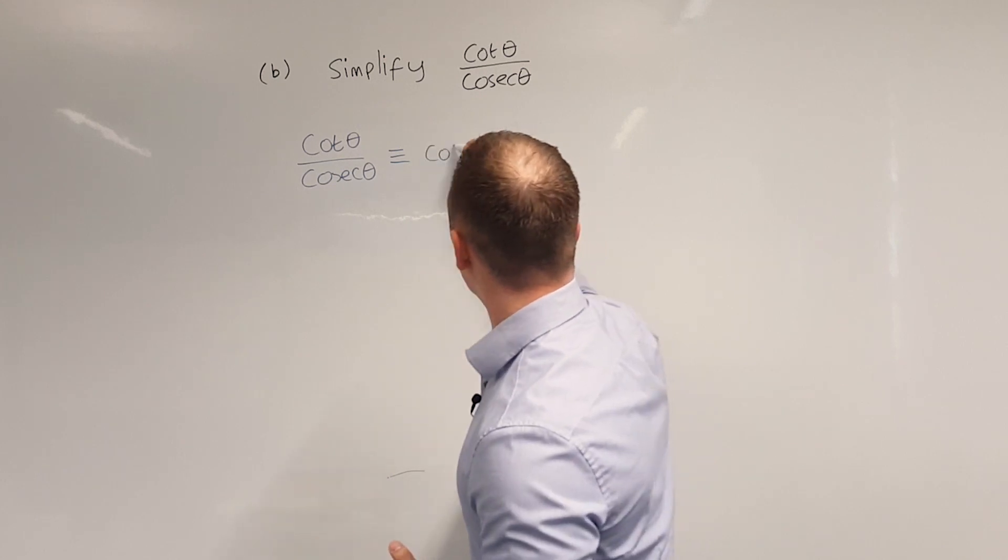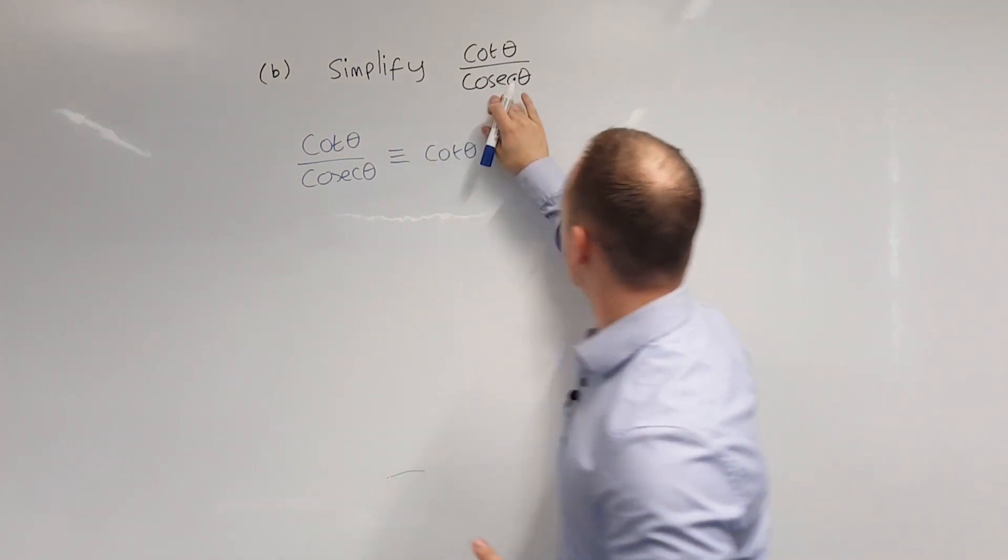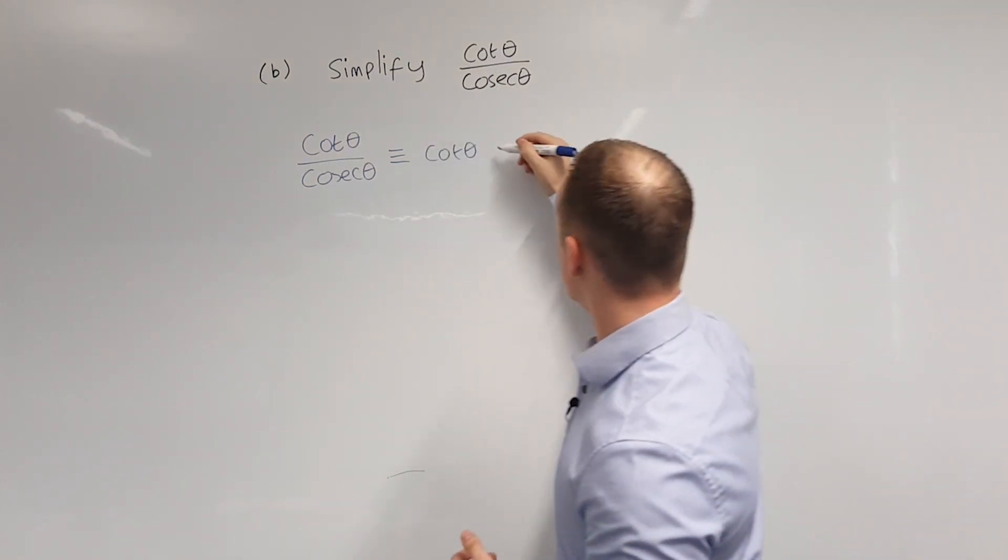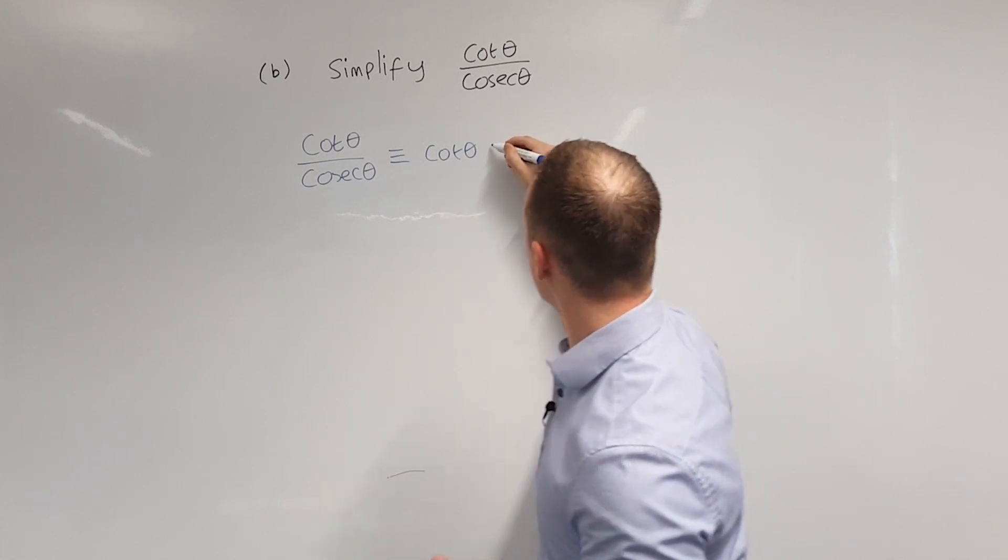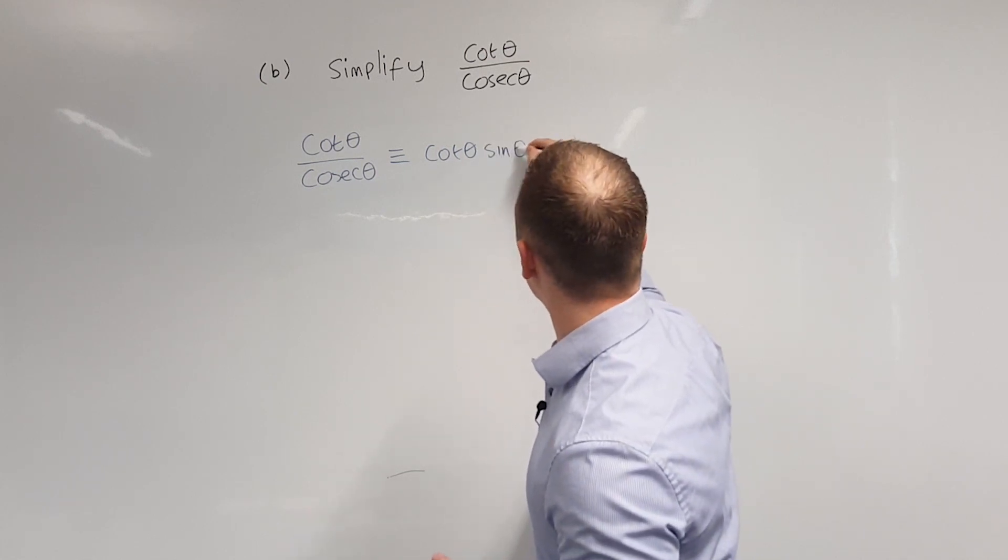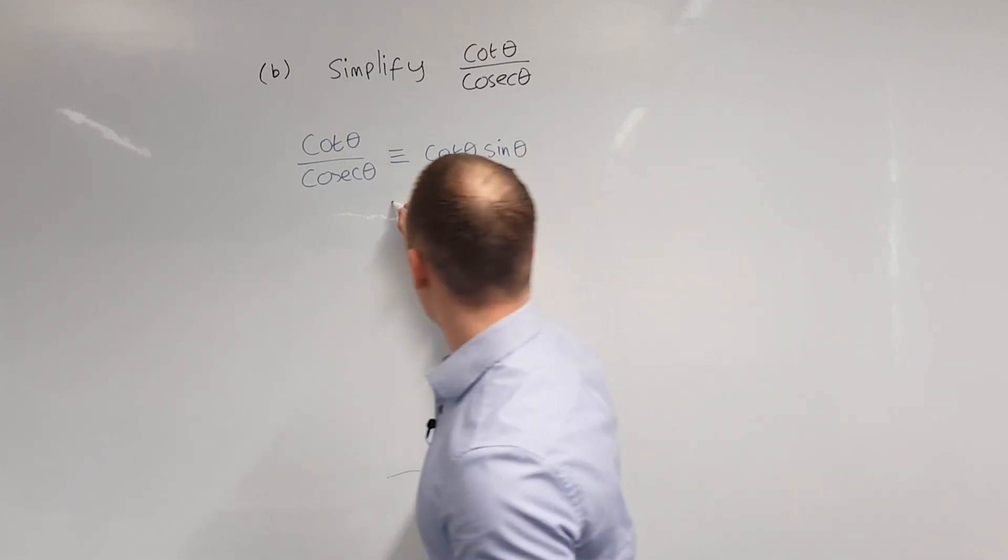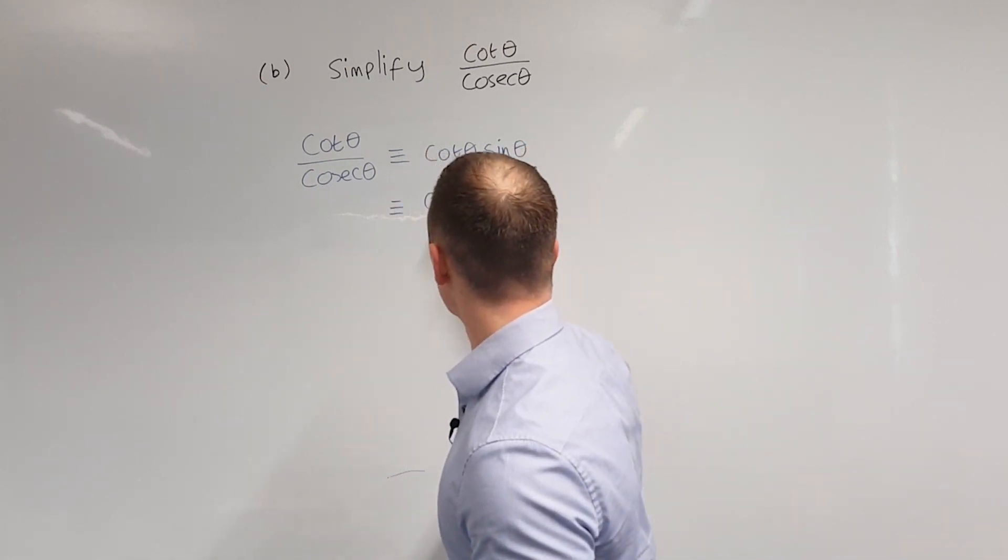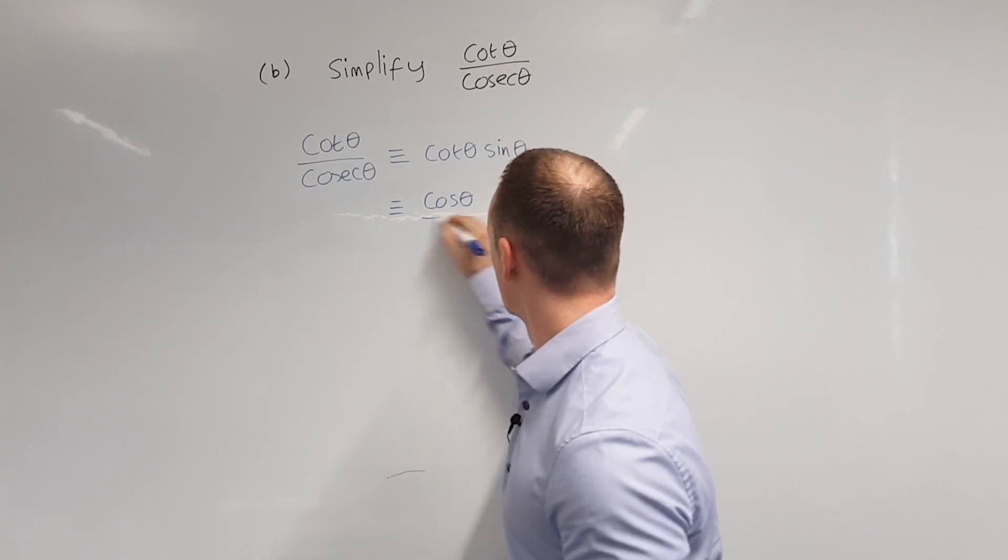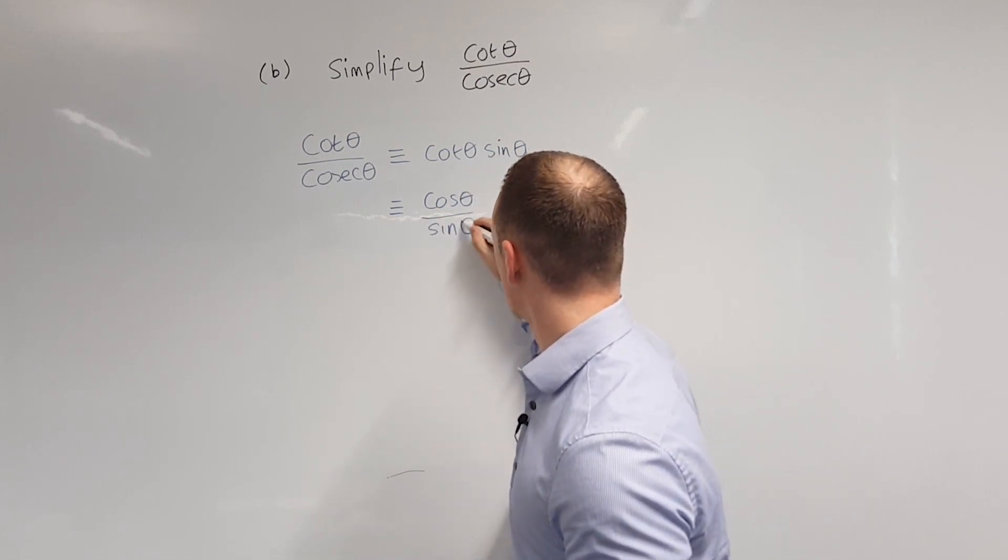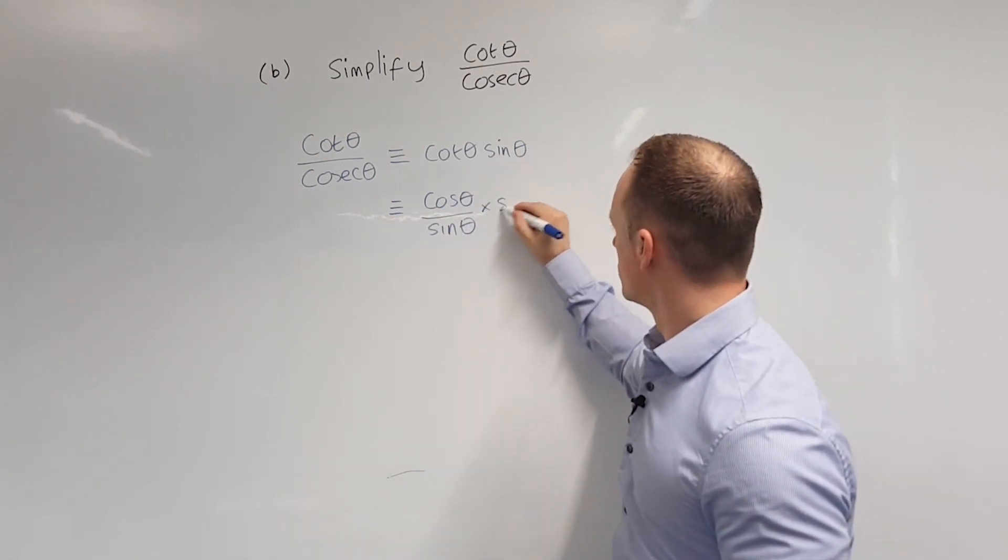So we'll leave the cot theta but we'll replace cosec theta with 1 over sin theta which means it ends up being cot theta multiplied by sin theta. From here we can write cot theta in terms of sin and cos so we can write it as cos theta over sin theta multiplied by sin theta.